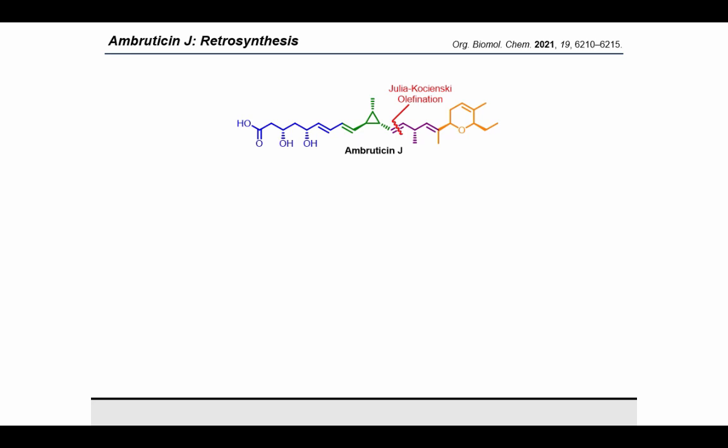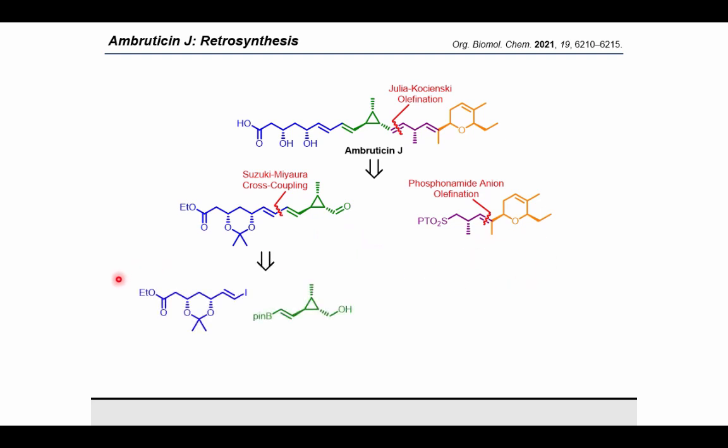Retrosynthetically, we envisaged we could construct Ambruticin J by Julia-Kocienski olefination to give this aldehyde and this sulfone. These could be assembled by a Suzuki-Miyaura cross-coupling to give this vinyl iodide and this vinyl boronic ester, and a second olefination. We hoped this highly modular route would provide rapid access to Ambruticin J and facilitate the formation of analogues for substrate specificity studies on AmbJ. Furthermore, we hope to synthesize analogues of the Ambruticins with improved biological activities.